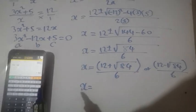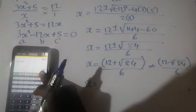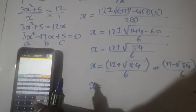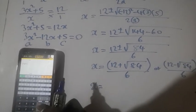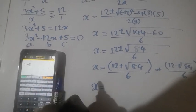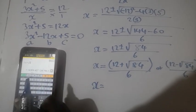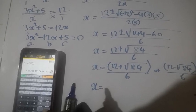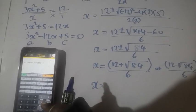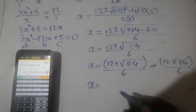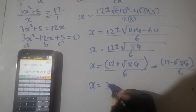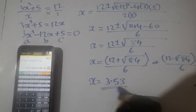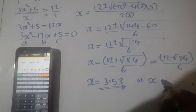So x equal to, so now we have to punch this on our calculator. So it's open brackets 12 plus square root of 84 close, equal to 21.3, then you divide by 6 which is equal to 3.53.